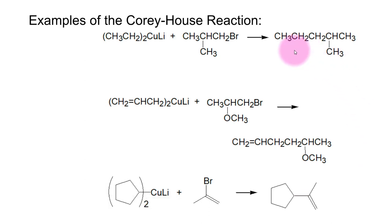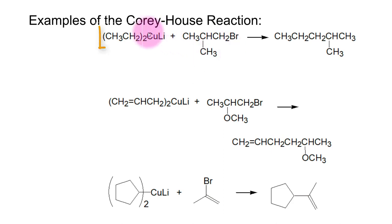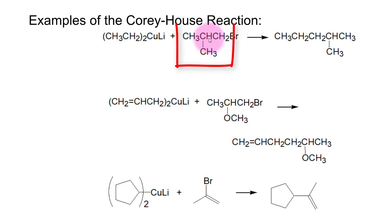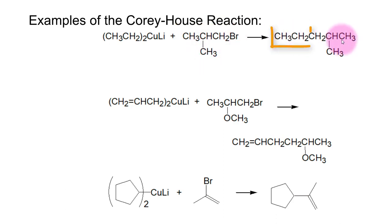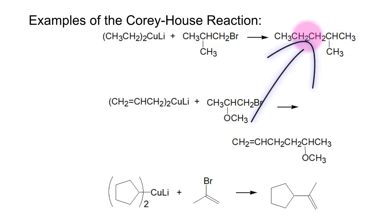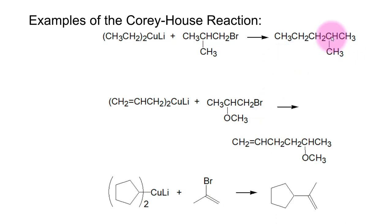Here are some examples of the Corey-House reaction. The Gilman reagent is diethyl copper lithium, and the alkyl halide is isobutyl bromide. The ethyl group from the Gilman reagent and the isobutyl group from the alkyl halide link together, forming a new carbon-carbon bond, giving a carbon skeleton with a total of six carbons — from one that had four and one that had two.